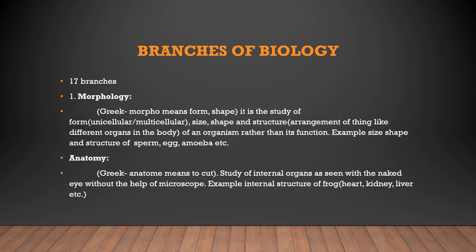In morphology, we study the form of an organism — whether it is unicellular (one cell) or multicellular (many cells) — as well as its size, shape, and structure. Structure includes the arrangement of organs in the body. For example, a sperm consists of three basic parts: the head, the neck or collar region, and the tail or flagella. This is the structure of sperm. Similarly, amoeba and other organisms are studied this way.